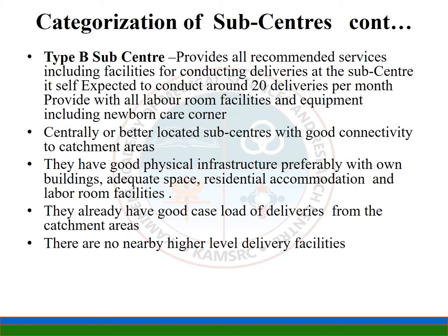Type B subcentres provide all recommended services including facilities for conducting deliveries at the subcentre itself. They are expected to conduct around 20 deliveries per month and are provided with all labor room facilities and equipment including a newborn care corner. They have good physical infrastructure — preferably their own building with adequate space, residential accommodation for the health worker, and labor room facilities. There are no nearby higher-level delivery facilities.